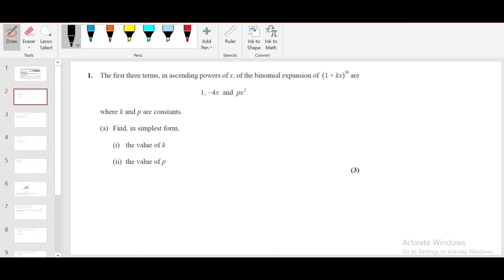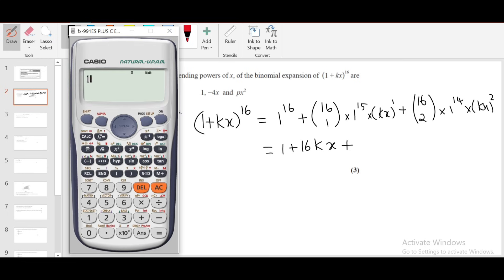The first three terms in ascending powers of x of the binomial expansion (1+kx)^16 are given as 1, -4x, and px². We need to find the value of k and p. So let's find the binomial expansion of (1+kx)^16 first. Using the binomial formula, we get 1 + 16kx + 16C2·k²x². 16C2 is 120, so it's 120k²x².